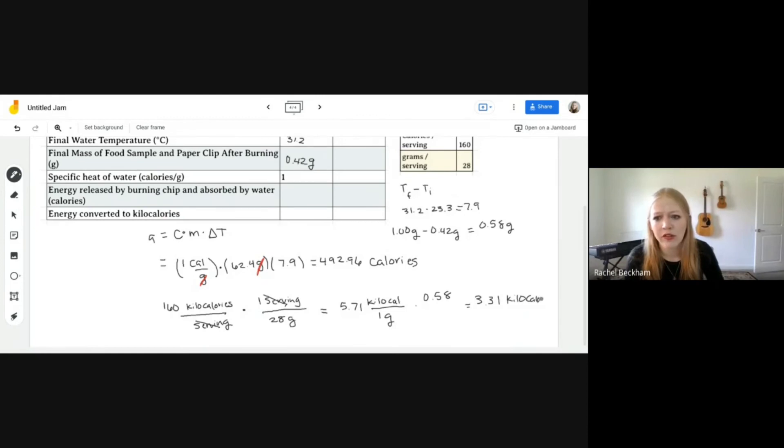Okay, well, if you see here, our units appear in calories. So to accurately compare, let's convert these to kilocalories as well. One kilocalorie has 1000 calories. So we're going to do 492.96 divided by 1000. And I'm getting 0.493. So if you look, the accurate number of kilocalories in that chip should be about 3.31 kilocalories.